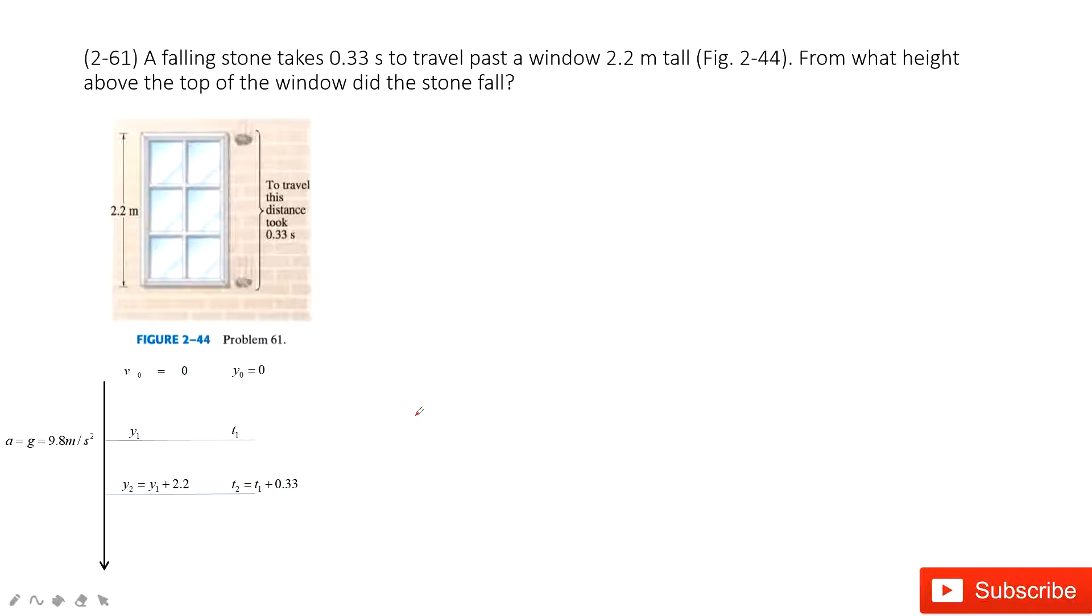We can see it tells us there is a falling stone, takes 0.33 seconds to travel past a window 2.2 meters tall. So in this one, we can draw a picture.